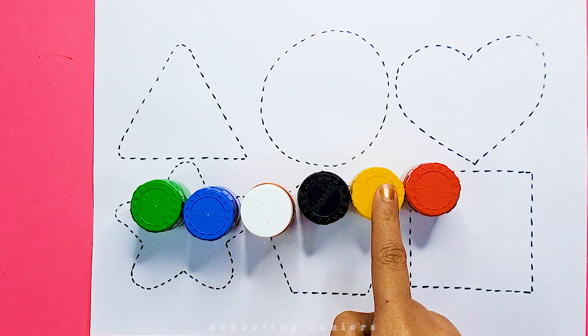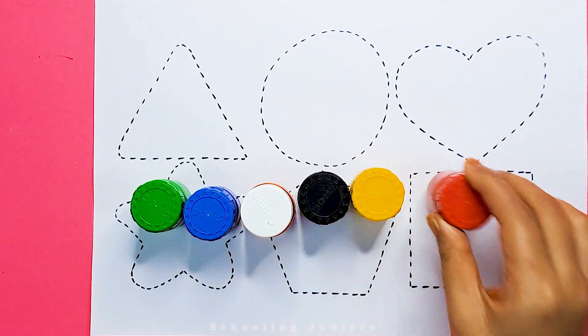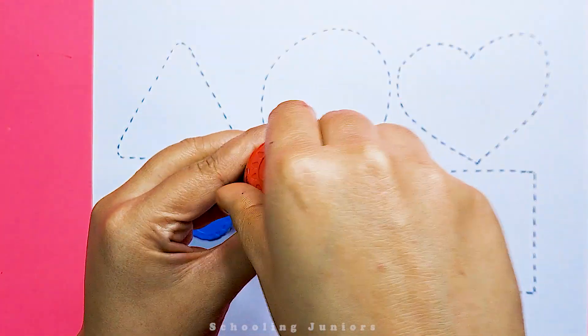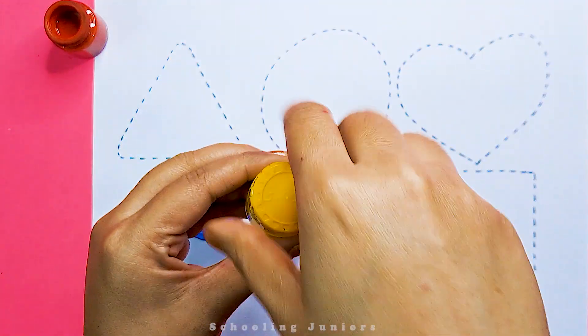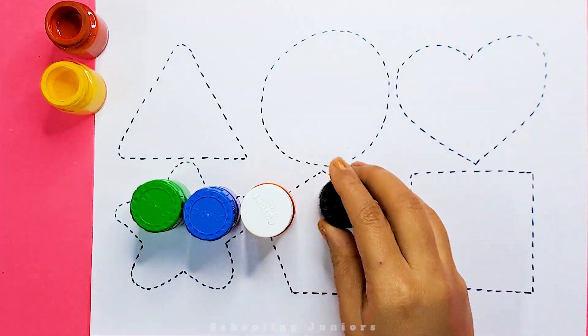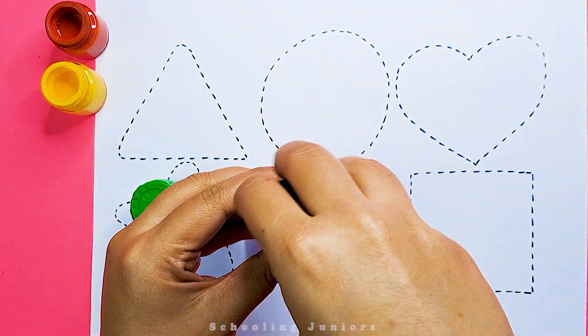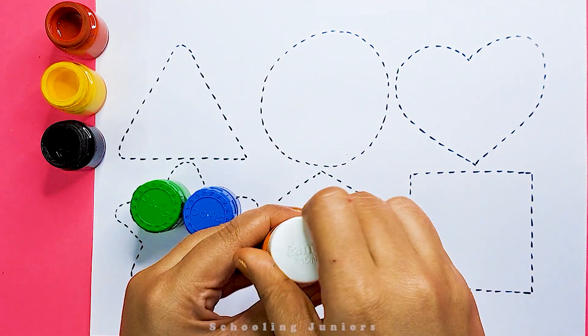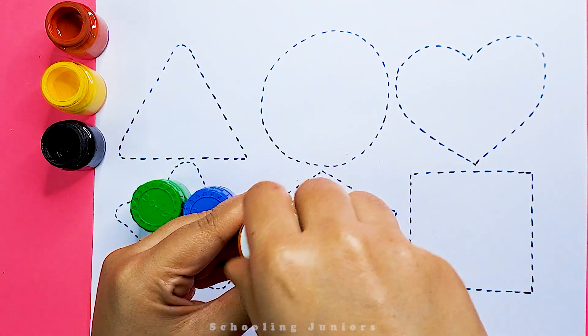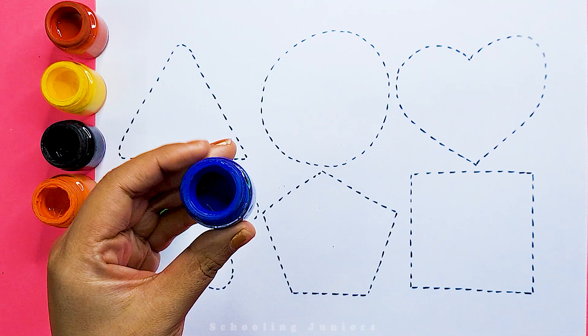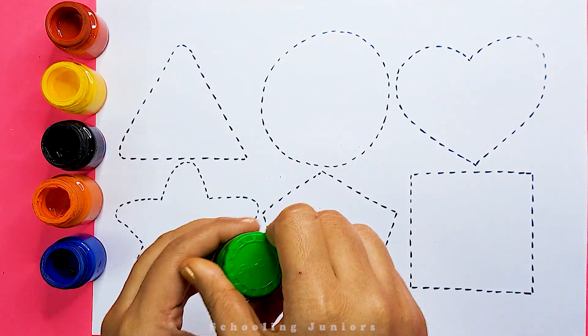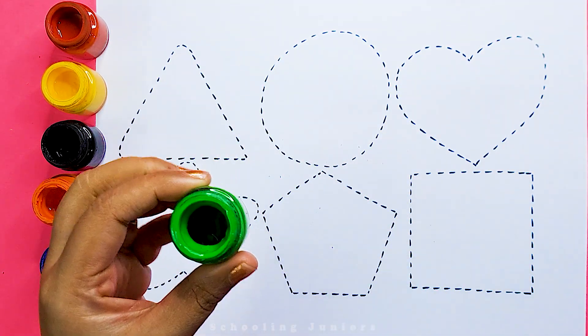This is our lovely colors. This is red color. This is yellow color. This is black color. This is orange color. This is blue color. This is green color.